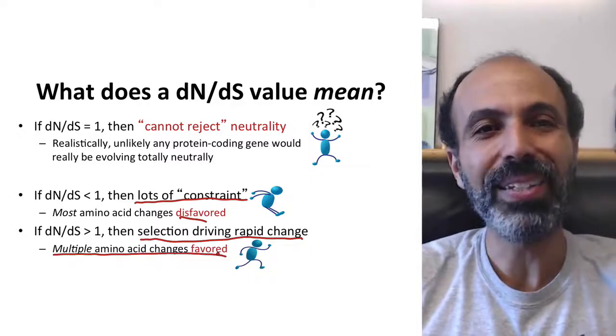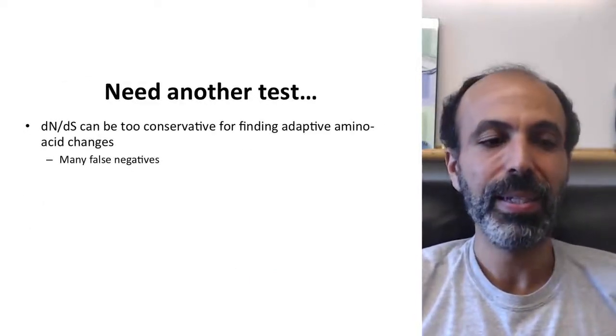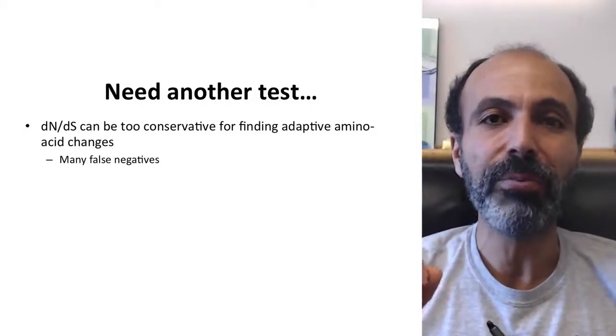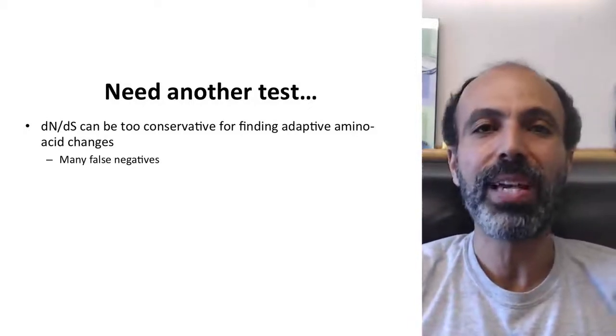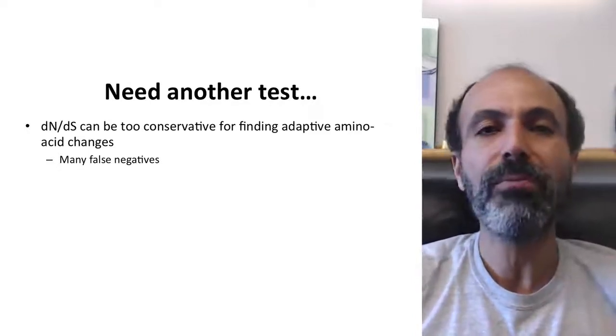Well, this is not entirely satisfying, as you can tell. We basically need another test because dN/dS can end up being a little bit too conservative, especially if you're looking for those adaptive amino acid changes, that high dN/dS value. You'll have way too many false negatives. So, in the next video, we'll look at a test that is a little bit better at catching these kinds of adaptive amino acid changes. It's referred to as the McDonald-Kreitman test. Hope you'll join us. Thank you.